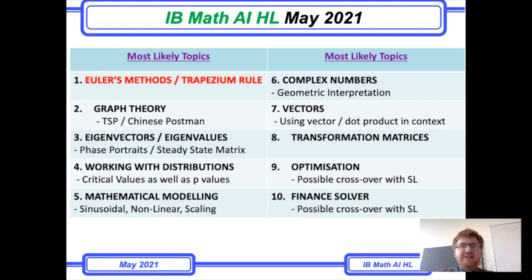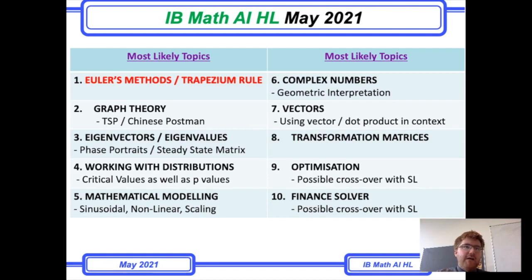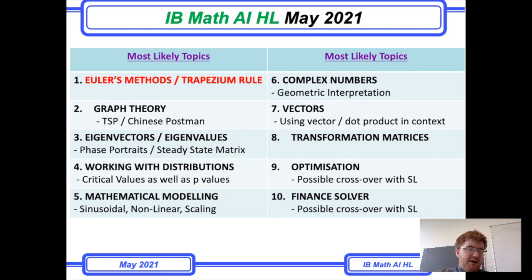Number six is complex numbers. I think this is going to come up in some kind of geometric interpretation — they'll have an Argand diagram and you'll have to work out various different complex numbers using the different forms. I think this will be one question but a fairly sizable one.